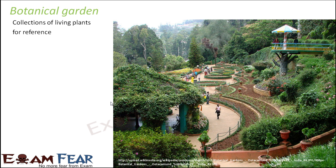There are many botanical gardens in India. One example is the Ooty Botanical Garden. These are big gardens with many different varieties of plants. If you have visited a botanical garden, you would have seen that every plant has a tag showing its name, scientific name, and other details. Enough care is taken so that all the plants can survive well in the garden.